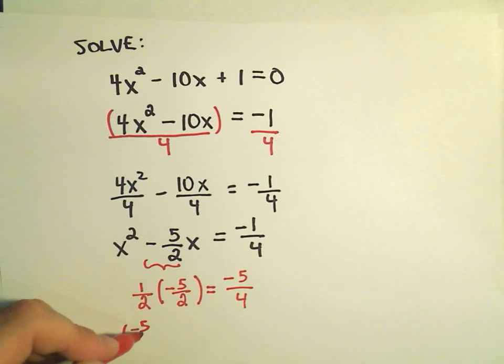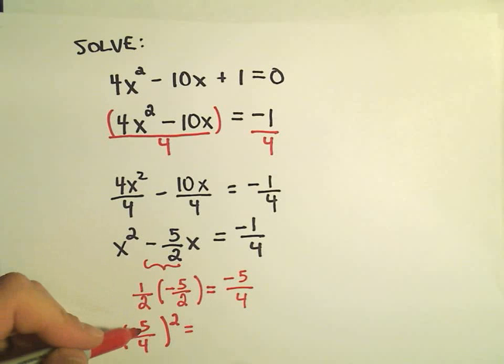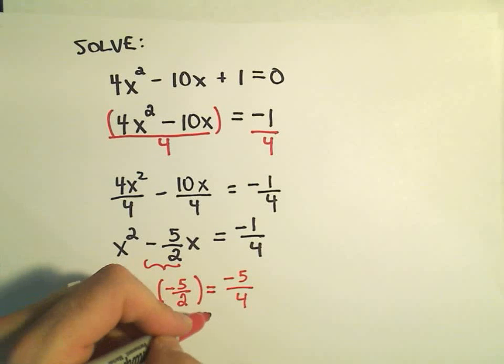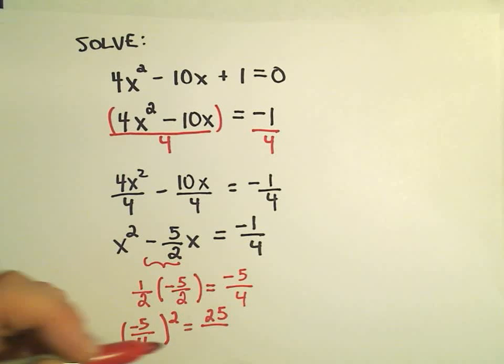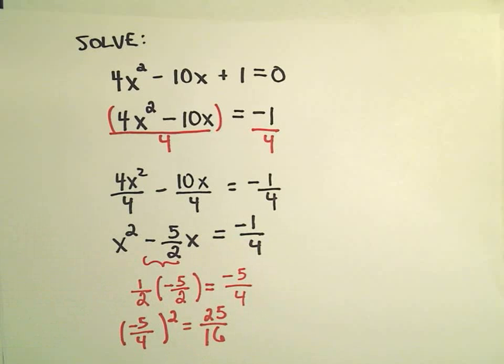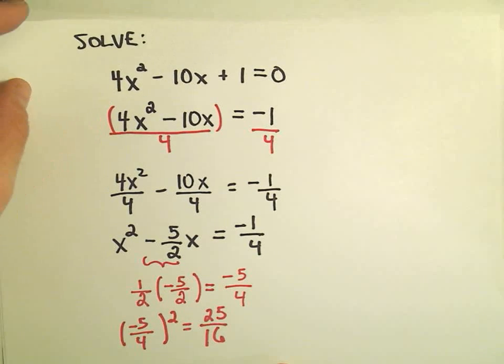And then we take this number, -5/4, and we square it. So, if we take -5 times -5, that'll give us positive 25. On the bottom, 4 times 4 is going to give us positive 16. And again, this is the number that we add to both sides of our equation.